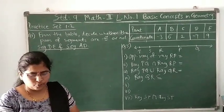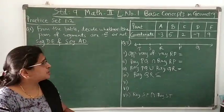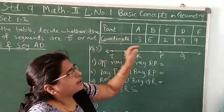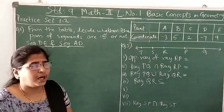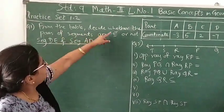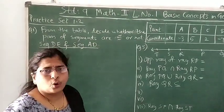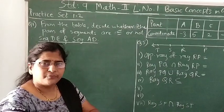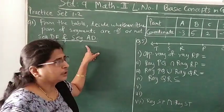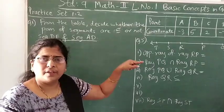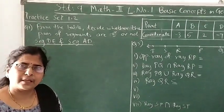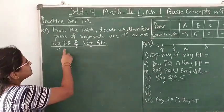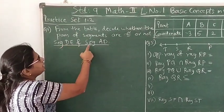Now let's solve practice set 1.2. In the first question there is a table given with some points and coordinates on a number line. We've been asked to decide whether the given pairs of segments are congruent or not. There are three pairs given but I have taken a different pair. From this example you can solve the questions by your own. What pair have I chosen? You have to decide about segment DE and AD.